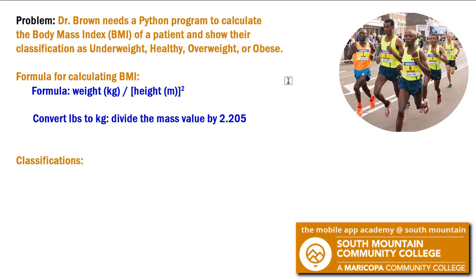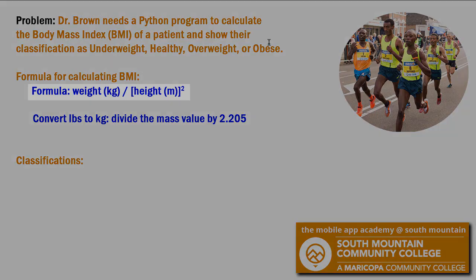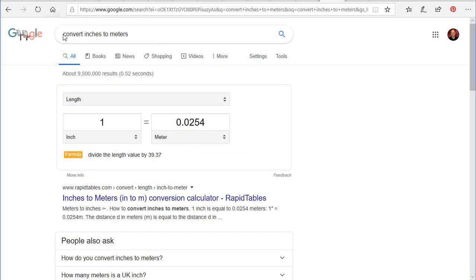Again, I'm going to go back to the internet. And I'm going to search for convert inches to meters. And I'm told that one inch equals 0.025 meters. Or I can take the length, in our case it's going to be the height, and divide that by 39.37.